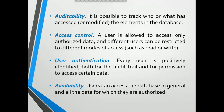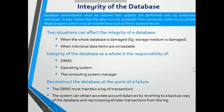Auditability means it is possible to track who or what has accessed the elements in the database. Access control means a user is allowed to access only authorized data, and different users can be restricted to different levels of access. User authentication means every user is positively identified both for audit purposes and for permission to access certain data. Availability means users can access the database and all data for which they are authorized.